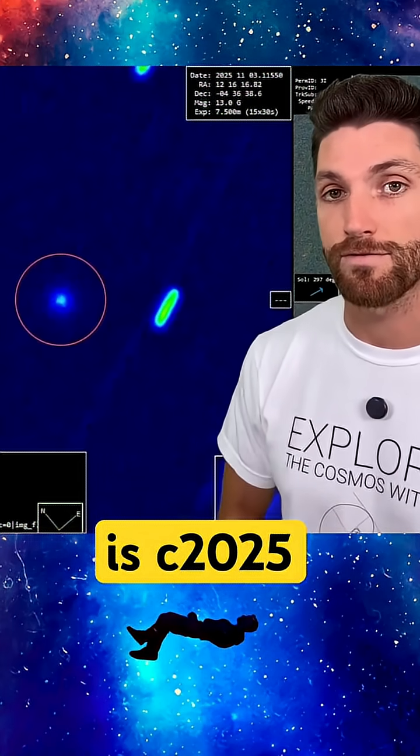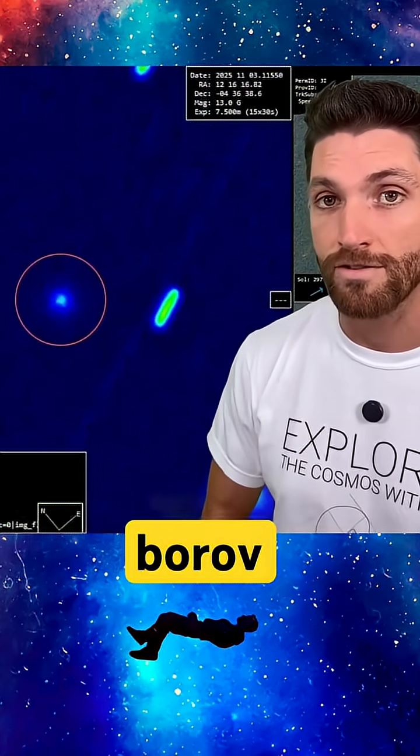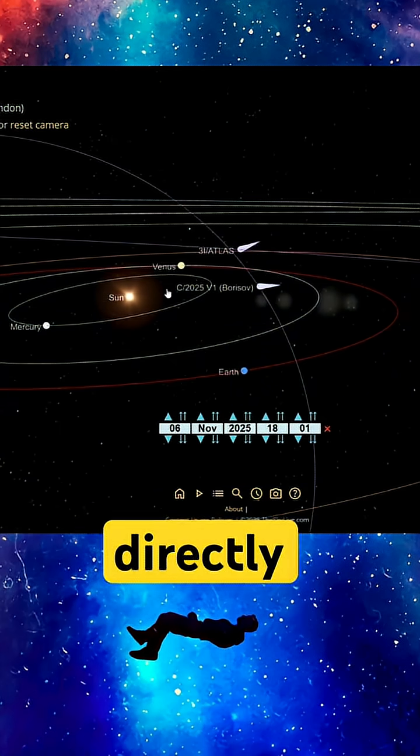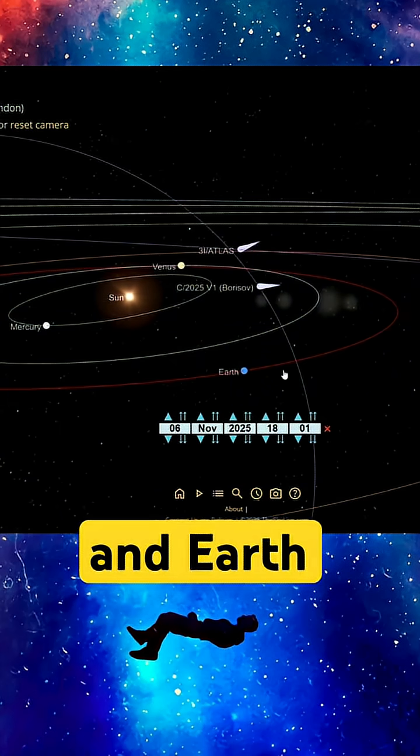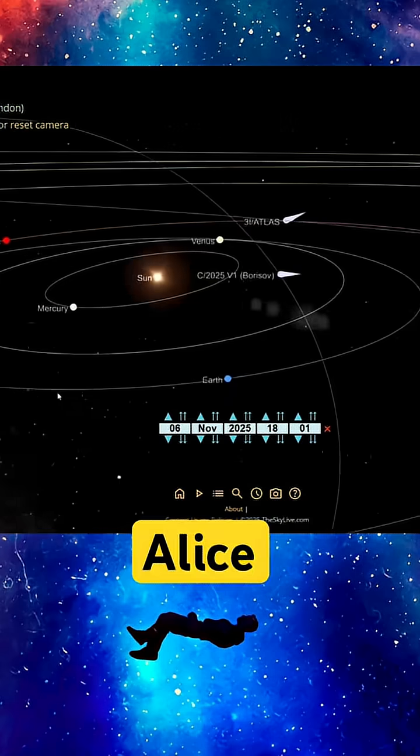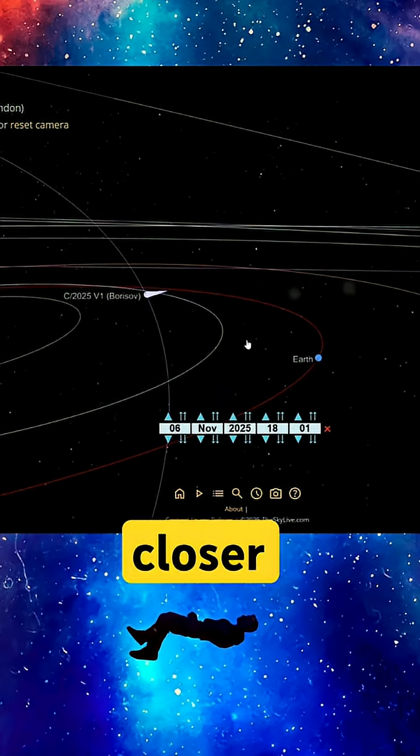This is C2025V1 Borisov. Now we have this object directly in between 3i Atlas and Earth. It does not have a tail, just like 3i Atlas. Very anomalous, very bizarre, actually closer to the sun than 3i Atlas.